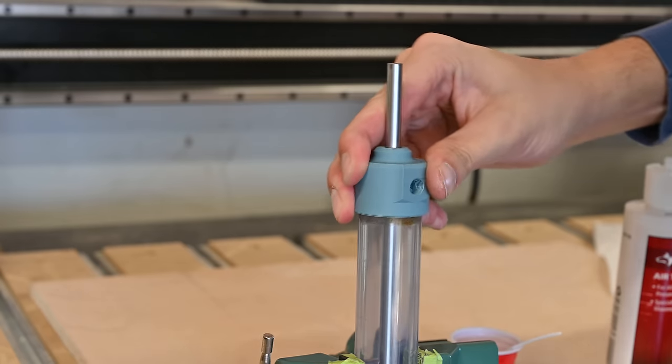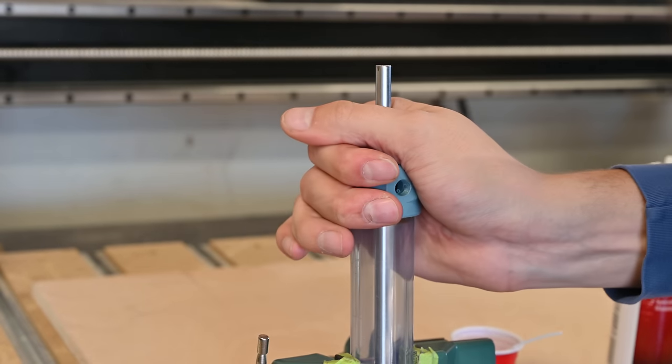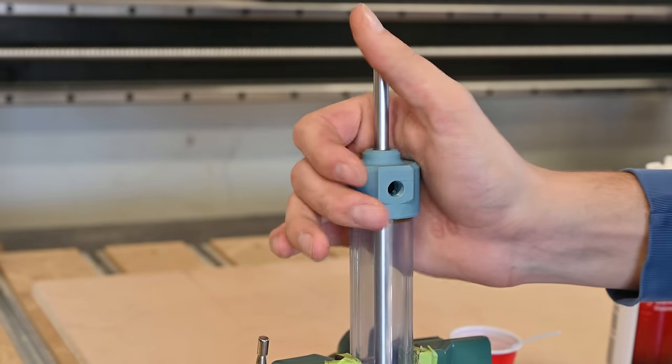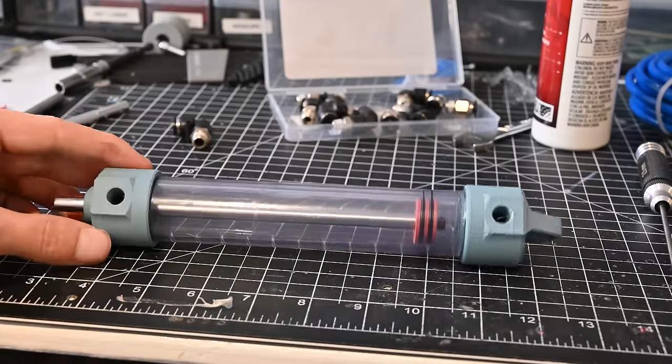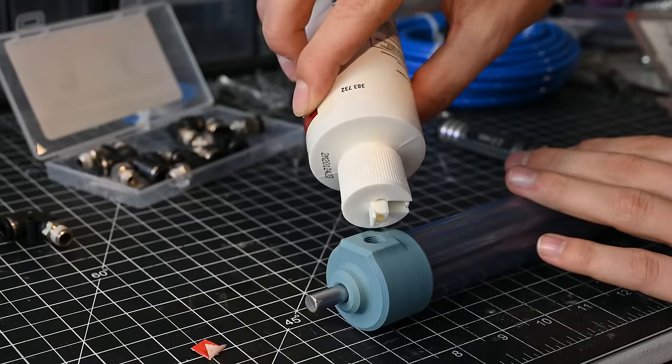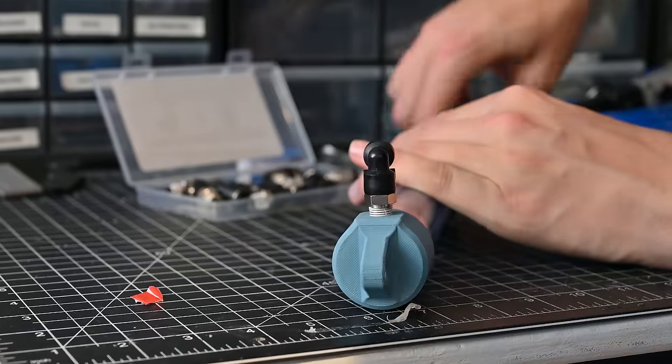Now although this first iteration does have flaws, I do want to still test it just to prove that this is even possible. So after waiting forever for the glue to dry, I could add some oil to help lubricate the piston seals, and then attach some air fittings.